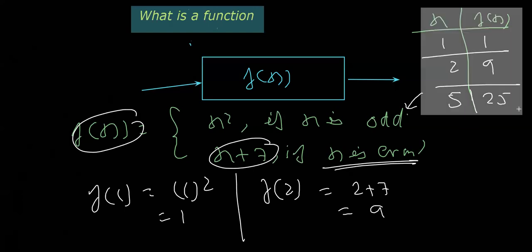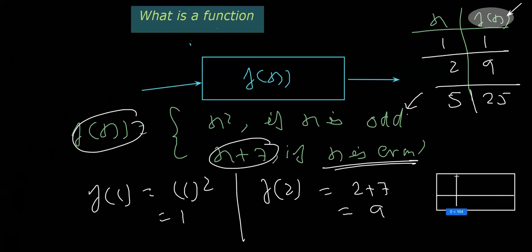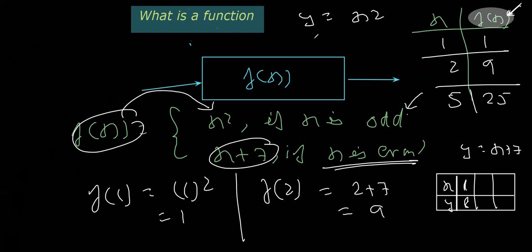This is something we've done in lower classes like class 8 and 9. If we replace f(x) with y, it's like making a table with x as input and y as output — for example, y = x + 7, placing x = 1 gives y = 8. We can also write y = x² or y = x + 7 in those respective cases.